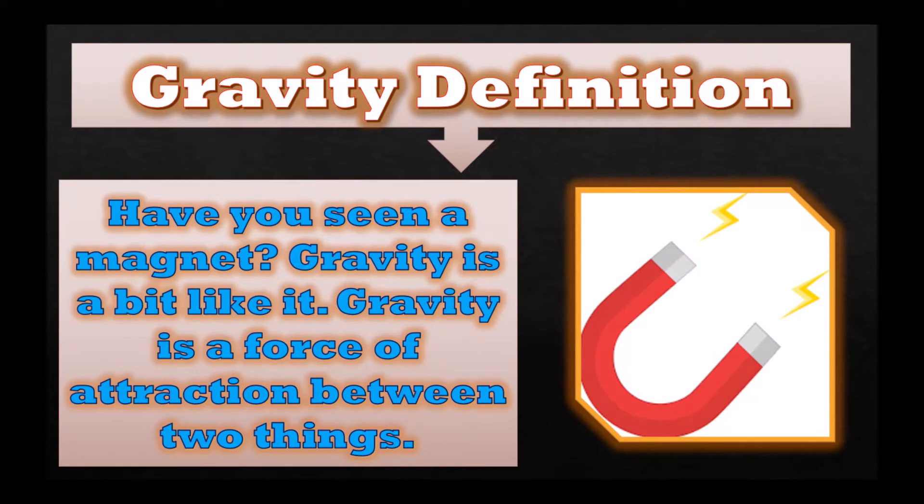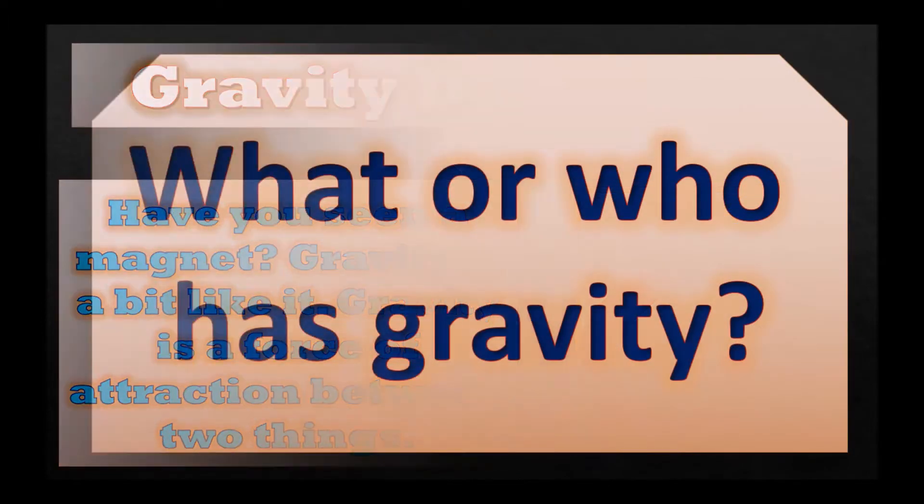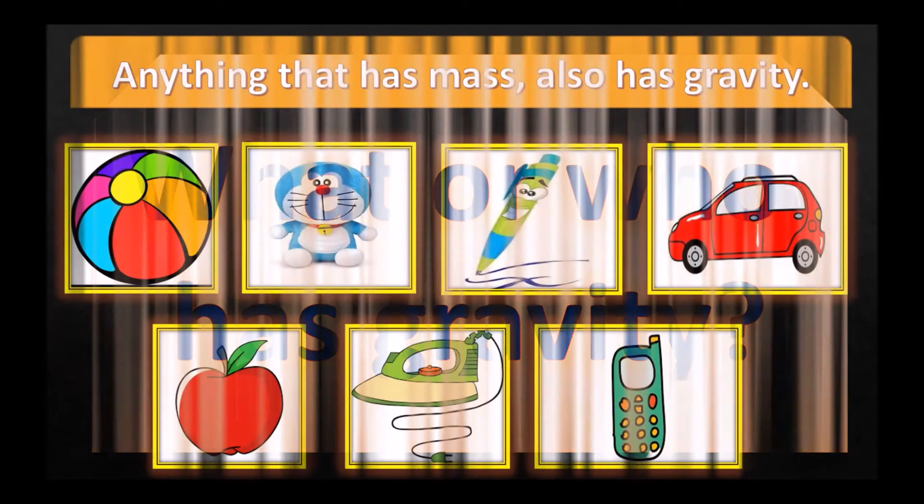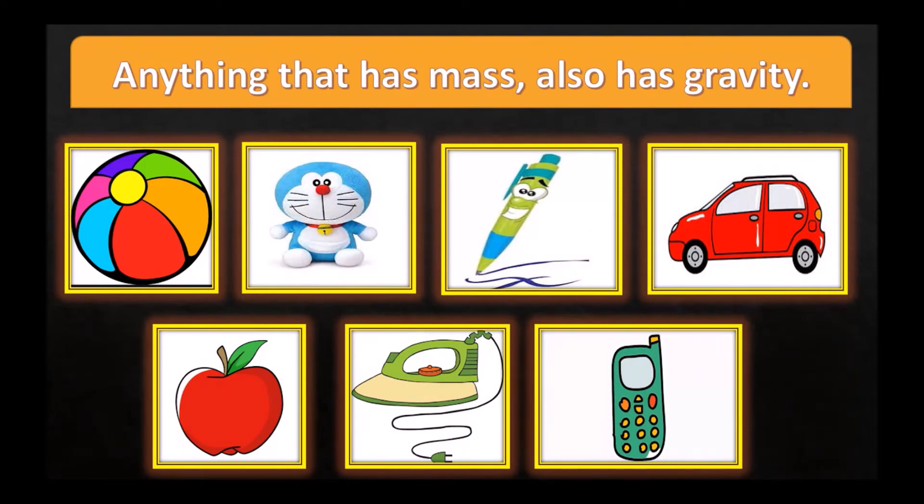Gravity definition: Have you seen a magnet? Gravity is a bit like it. Gravity is a force of attraction between two things. What or who has gravity? Anything that has mass also has gravity. See, all these things have gravity.